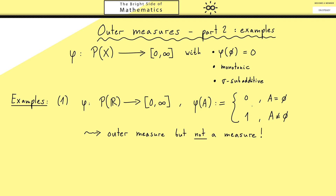This is a simple but good example because we immediately get an outer measure which is not an ordinary measure. You can see this immediately: we don't have sigma additivity (without the 'sub'). With the same reasoning, on the right-hand side you add up ones and on the left-hand side you don't, so without sigma additivity we don't have a measure.